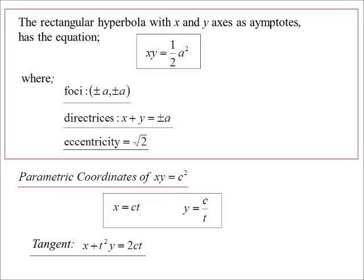The tangents, when you work it out, ends up being something like this. X plus T squared Y is equal to 2CT. And the normal, beautiful looking expression there. T cubed X minus TY is equal to C outside of T to the power of 4 minus 1. Again, sort of thing you're probably going to have to derive anyway.